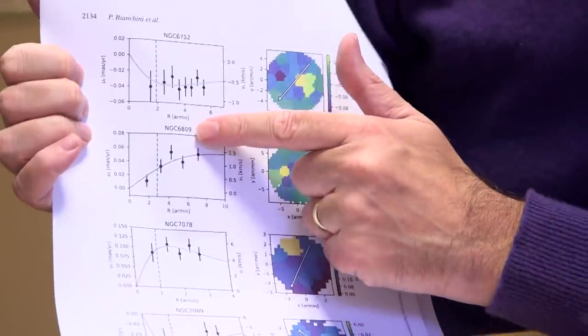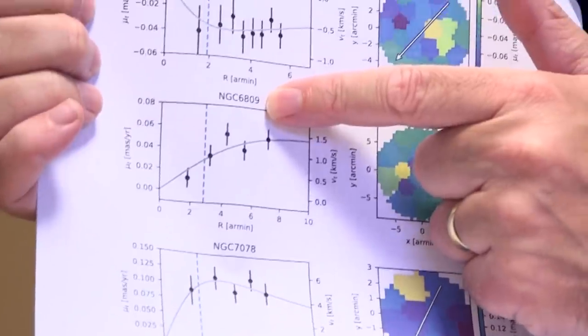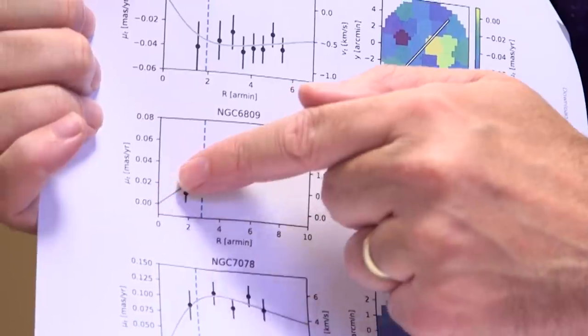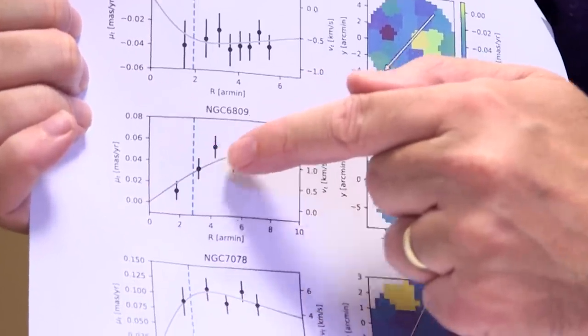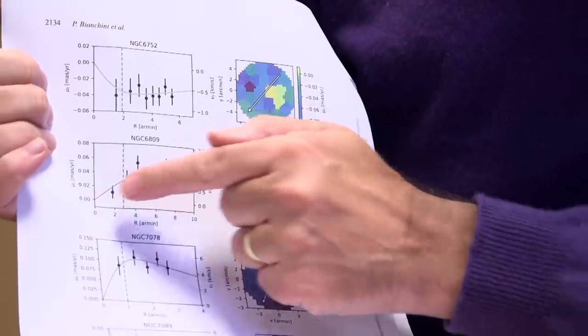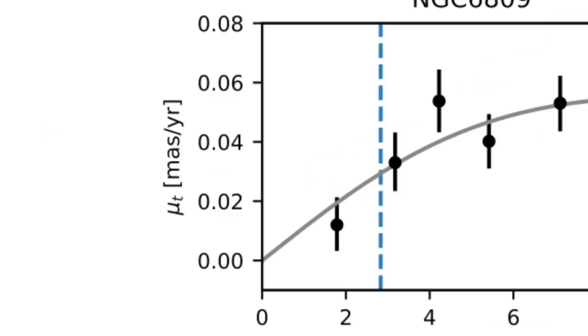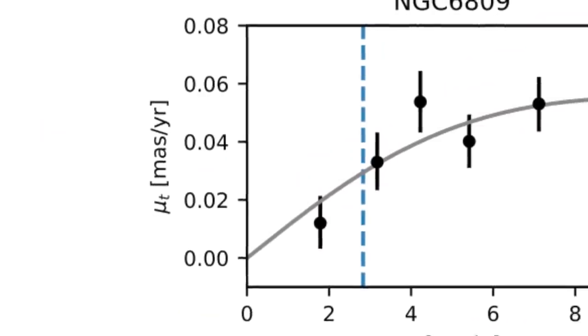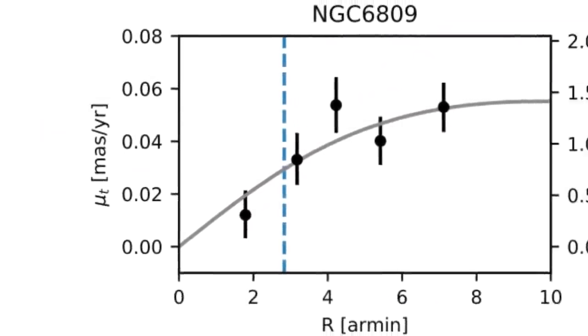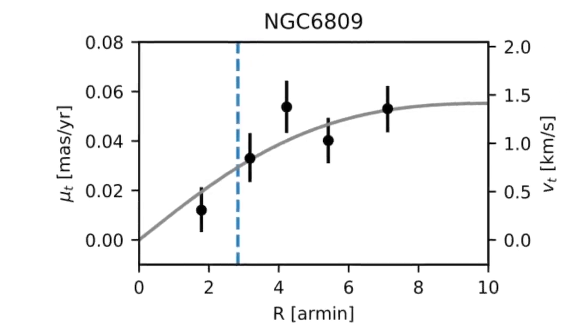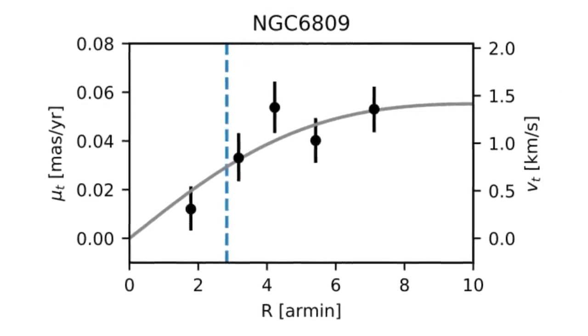There it is — Messier 55, otherwise known as NGC 6809. As you go away from the centre of the galaxy, this shows the movement of the stars on the plane of the sky, measured in milliarceconds per year. Translating that into velocity, it works out to about one kilometre per second. You can see that as you work your way outwards, the stars in this thing are all rotating around, staying more or less concentrated around one kilometre per second. So indeed, it is rotating on the plane of the sky.